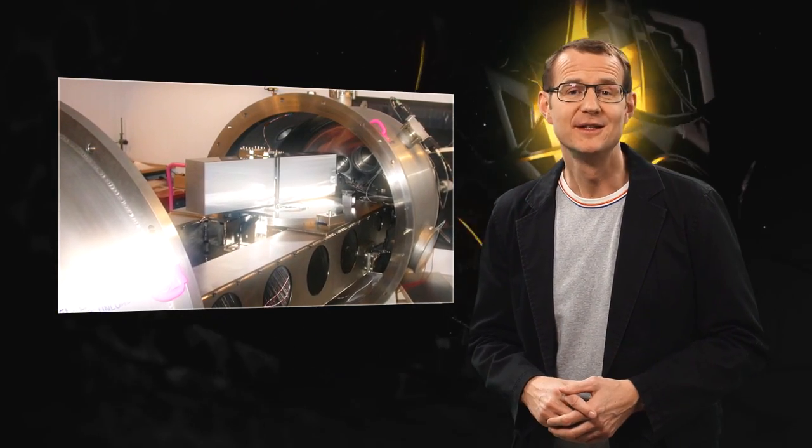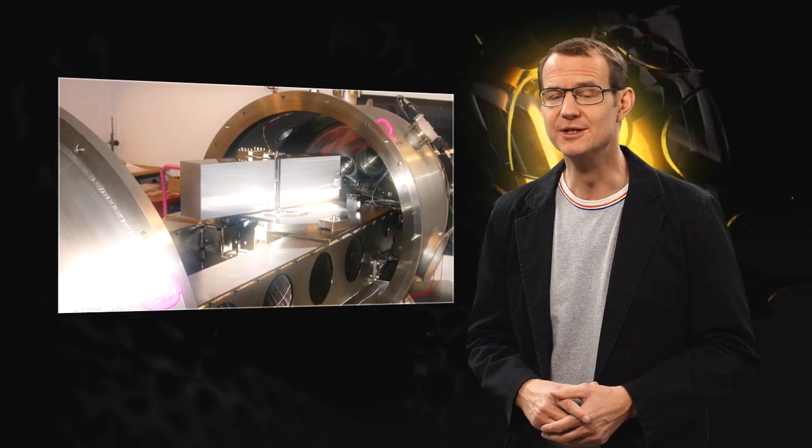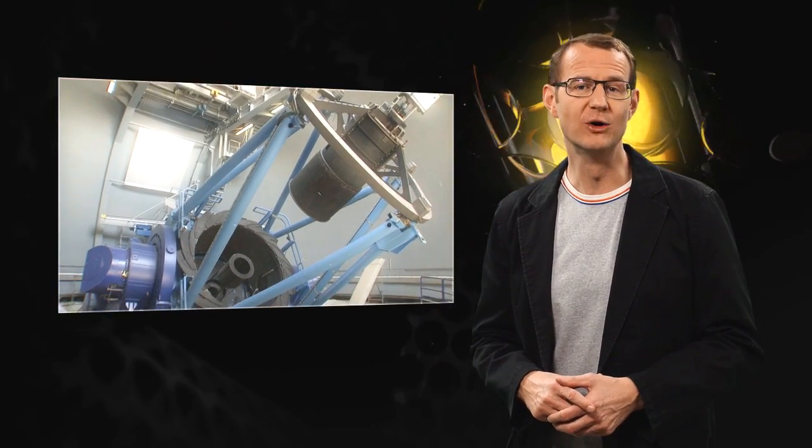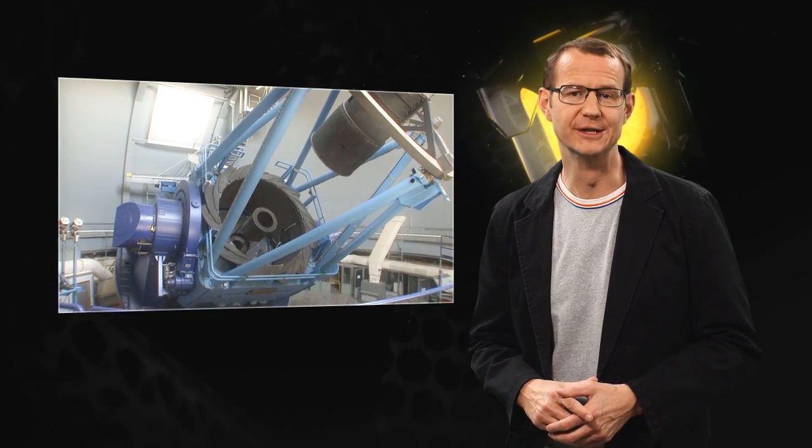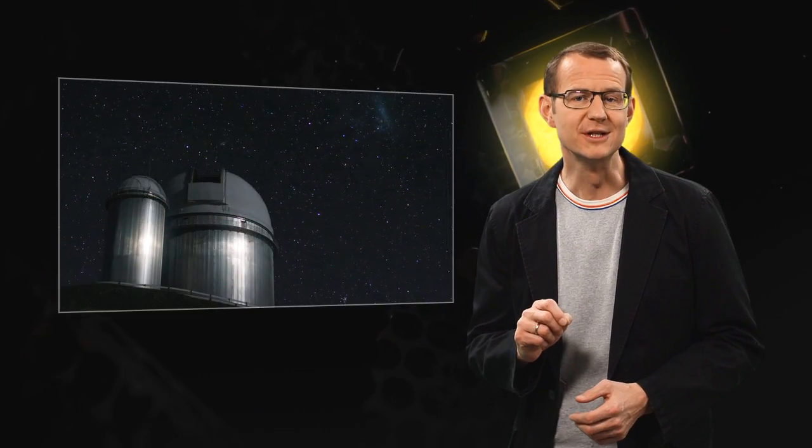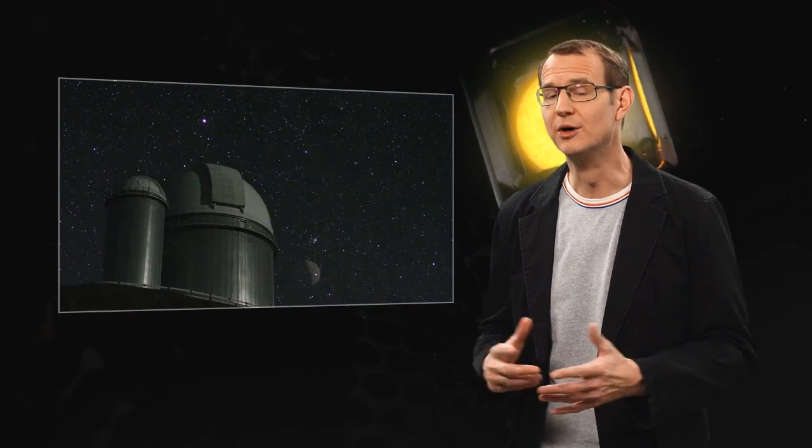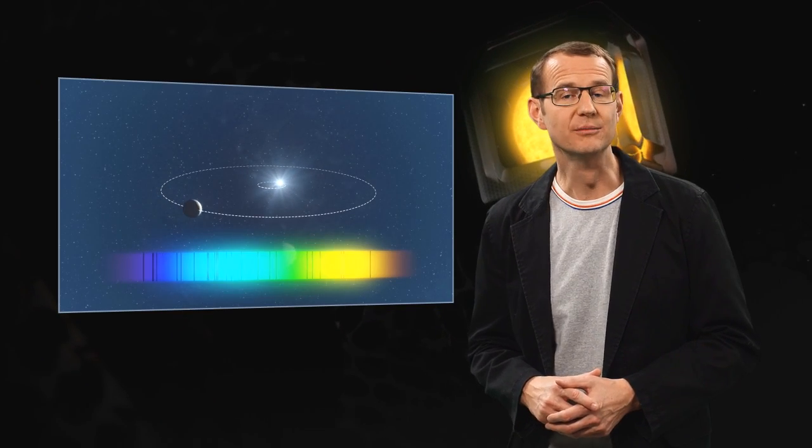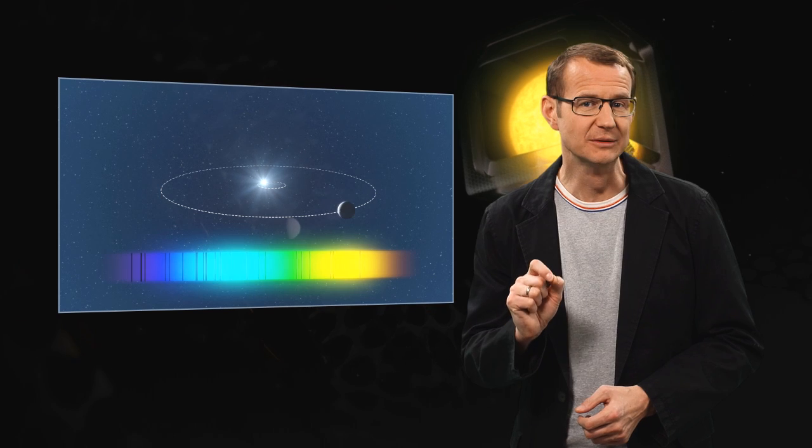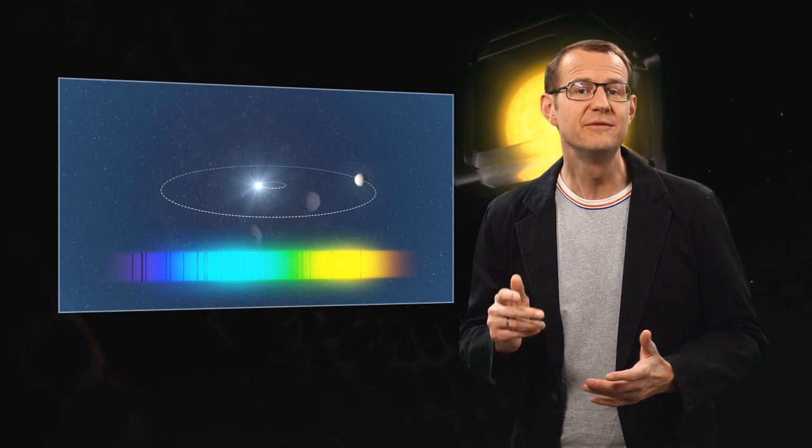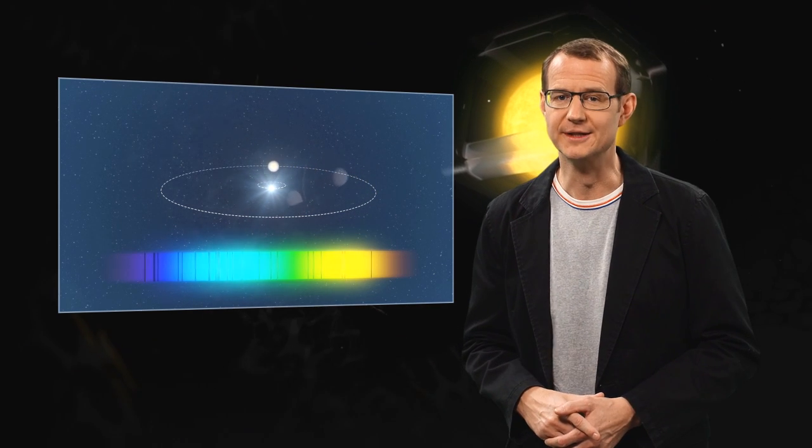To find the new exoplanets, the astronomers used the HARPS instrument on the 3.6-meter telescope at ESO's La Silla Observatory. They carefully monitored 88 selected stars in Messier 67 for a number of years. That allowed them to look for the tiny telltale motions of the stars that reveal the presence of orbiting planets.